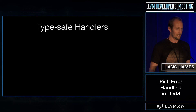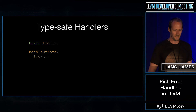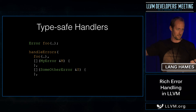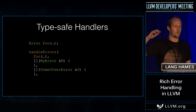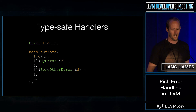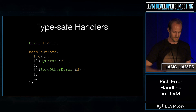You also get type-safe handlers with this system, a lot like a catch clause in C++ exceptions. There's a function called handleErrors — you pass in an error as the first argument, and then you can give it a list of handlers, represented here by lambdas. The handleErrors function will walk down your list of lambdas until it finds the first one whose type matches the dynamic type of the error that was thrown, and it'll run that handler for you. If there is no matching handler, your error will come back out of the handleErrors routine, and you have to pass it off the stack.